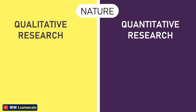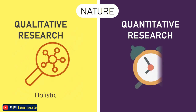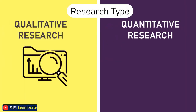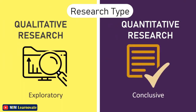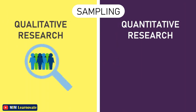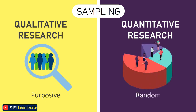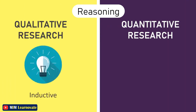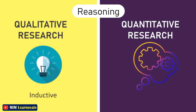Nature: Qualitative research is holistic in nature, whereas quantitative research is particularistic. Research type: qualitative research is exploratory; quantitative research is conclusive. Sampling: qualitative research is based on purposive sampling, where a small sample size is selected to get a thorough understanding of the target concept; whereas quantitative research relies on random sampling, wherein a large representative sample is chosen in order to extrapolate the results to the whole population. Reasoning: the reasoning used in qualitative research is inductive, while in quantitative research the reasoning is deductive.